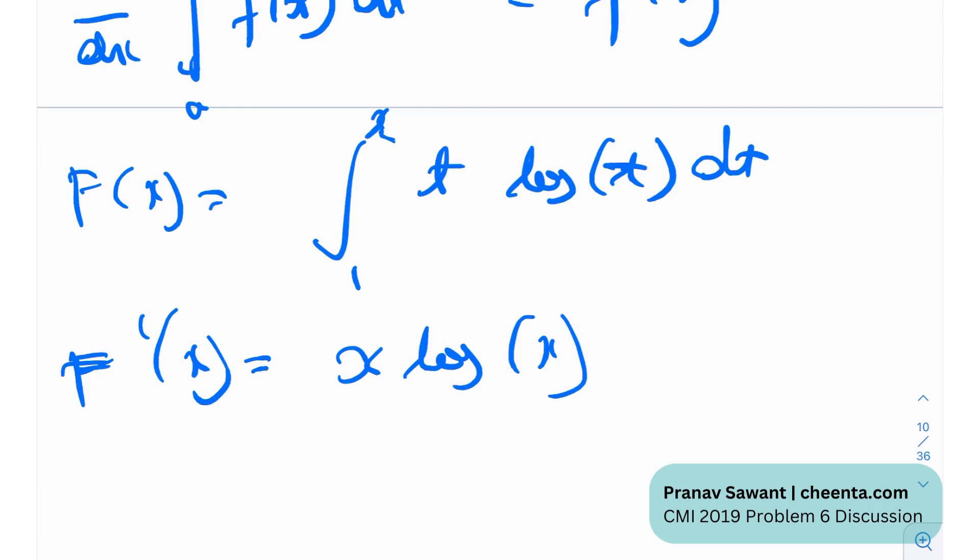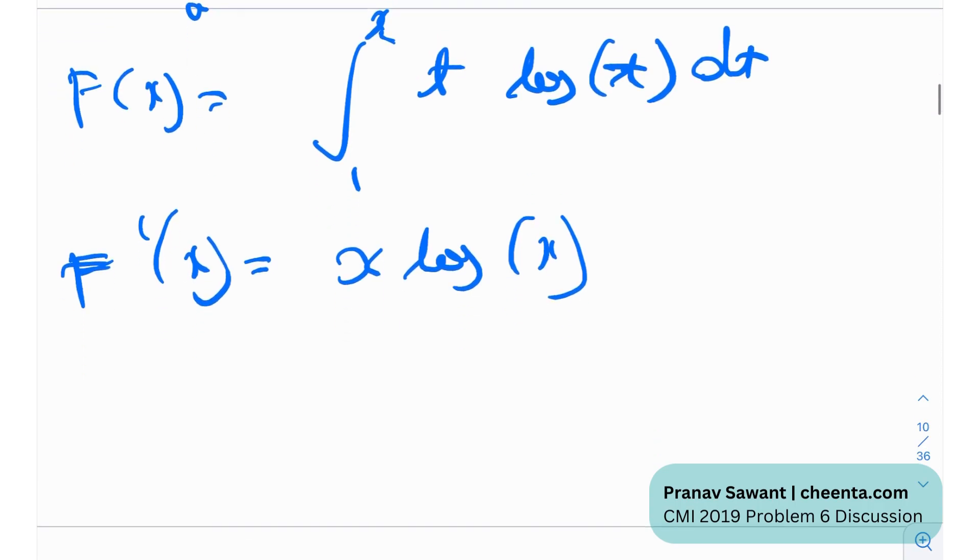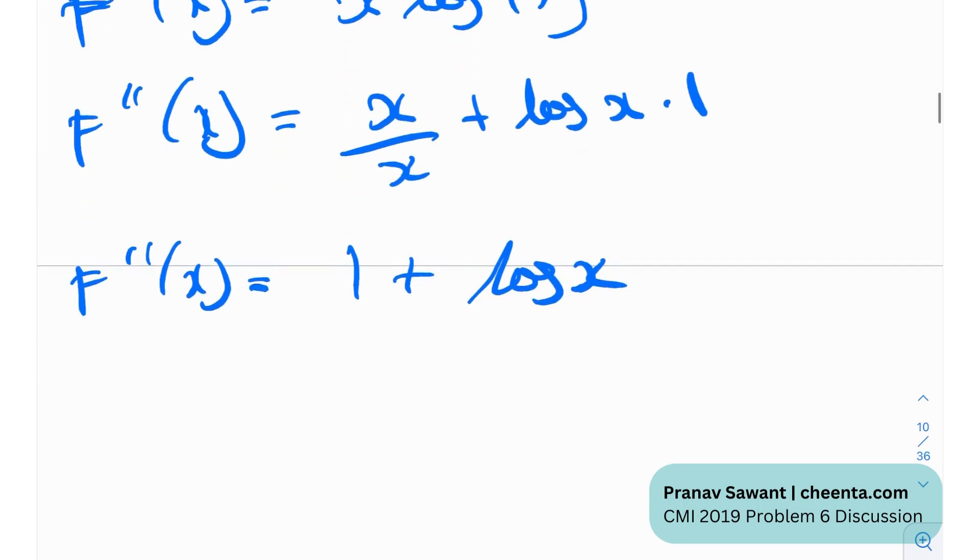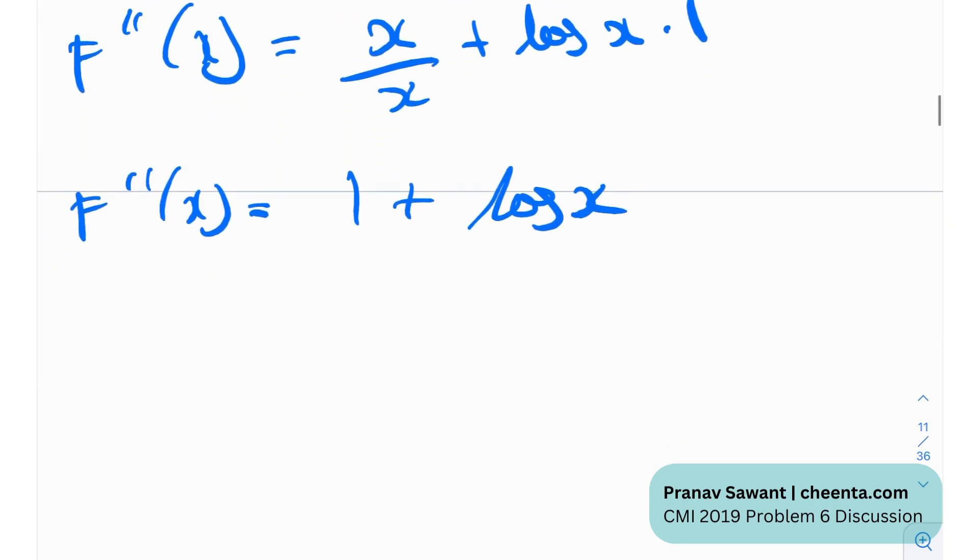And now once we have this we can make certain claims about this function f. Now that we have found the derivative we can find out the double derivative. And this is just the product rule, it will be x by x plus log x and the differentiation of x is one so the double derivative of x would be nothing but one plus log x.